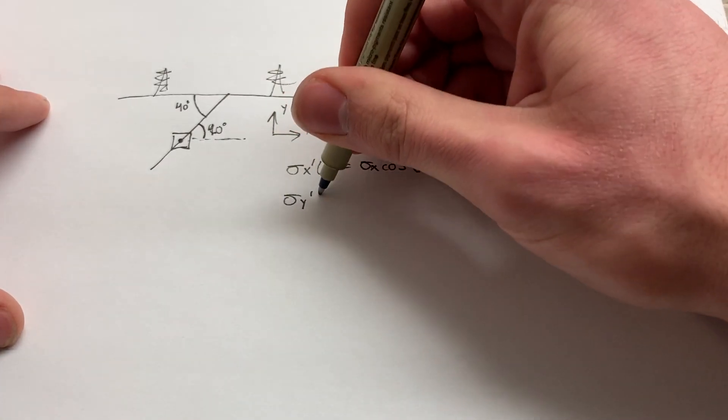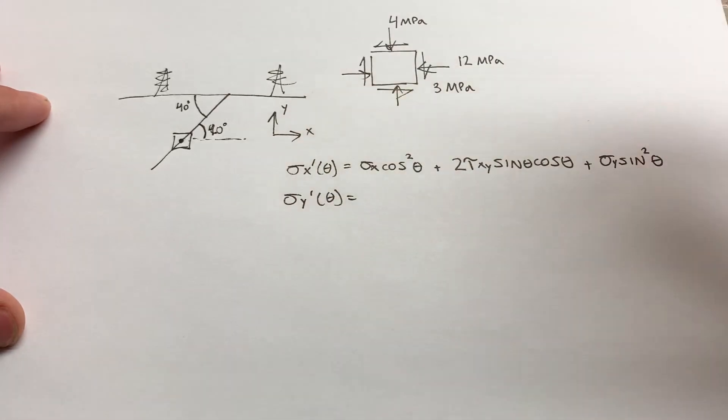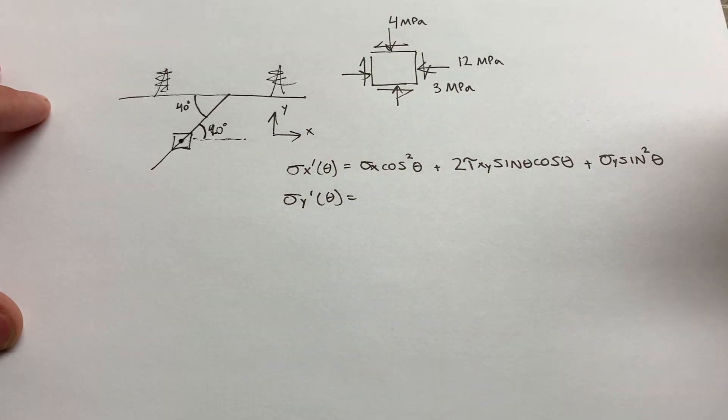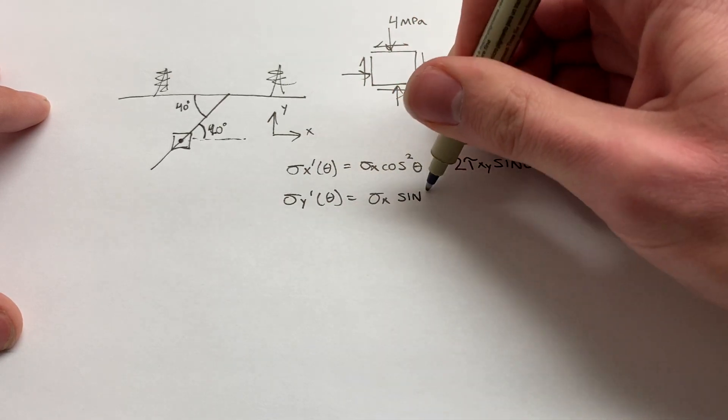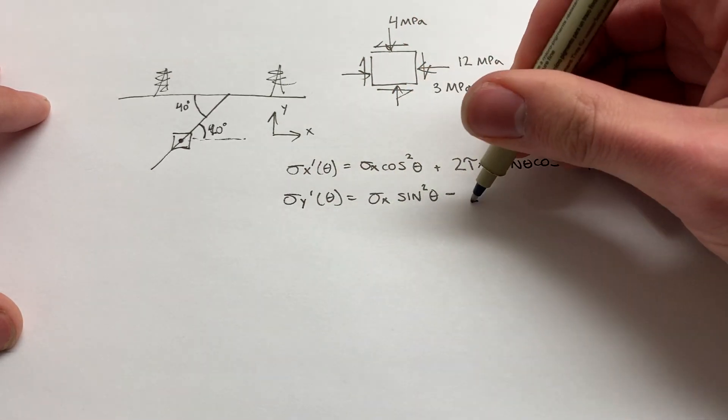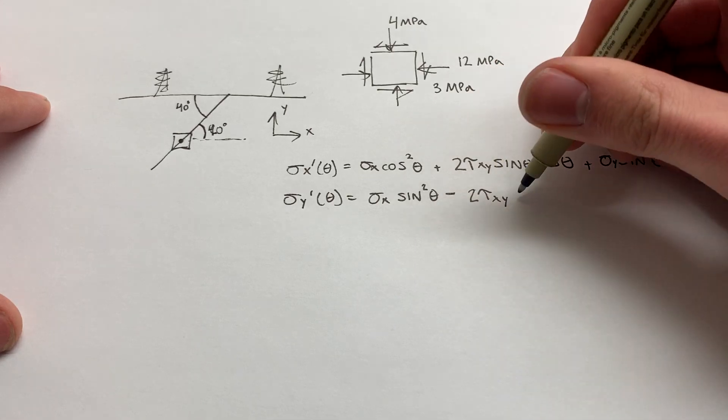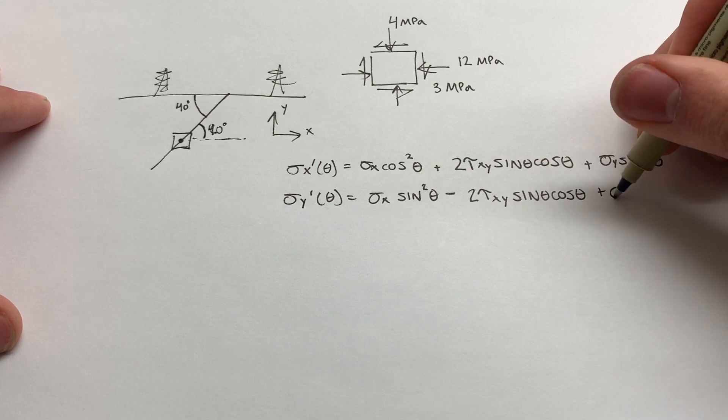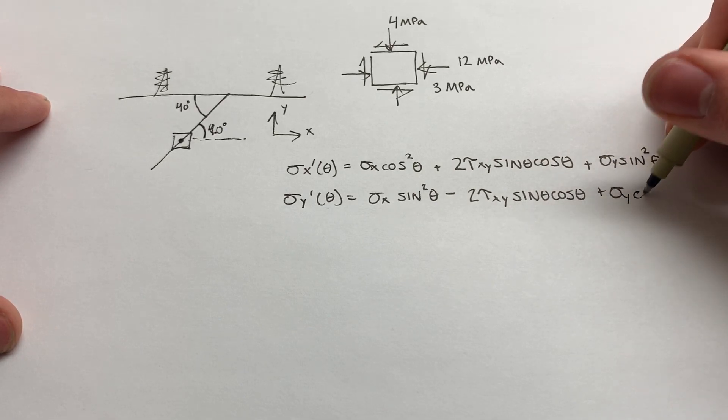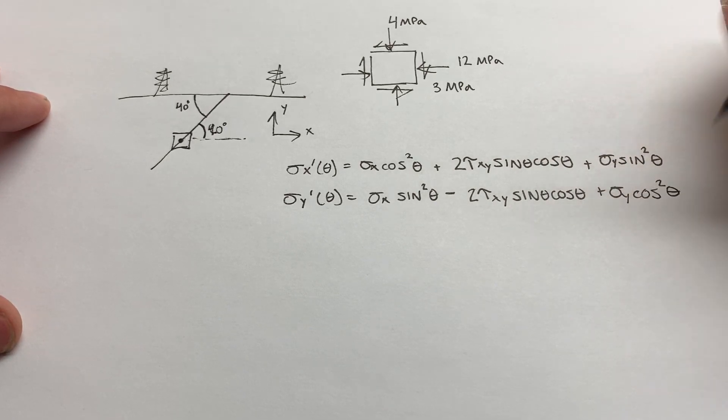And then the final term is plus sigma Y sine squared theta. Similarly, we can find sigma Y prime of theta. That's going to be sigma Y at the rotated location. And that's going to be sigma X instead of cosine squared. We now have sine squared theta minus 2 tau XY sine theta cosine theta plus sigma Y cosine squared theta.